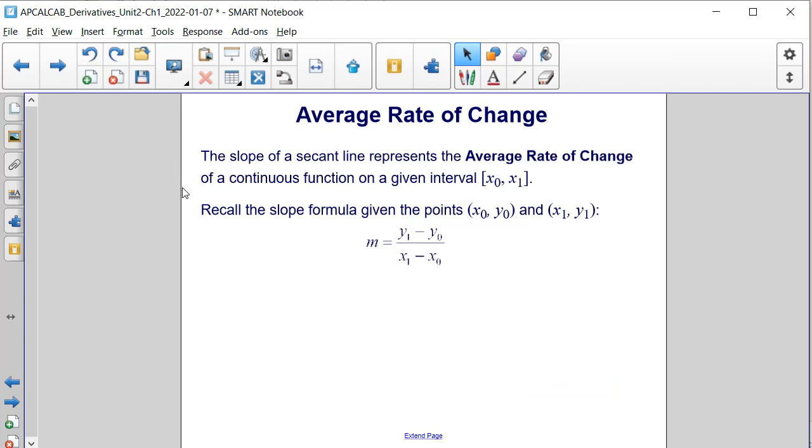The slope of a secant line represents the average rate of change of a continuous function on the given interval from x sub 0 to x sub 1. Recall the slope formula given the points x sub 0 y sub 0 and x sub 1 y sub 1. The slope or m value is equal to y sub 1 minus y sub 0 divided by x sub 1 minus x sub 0.